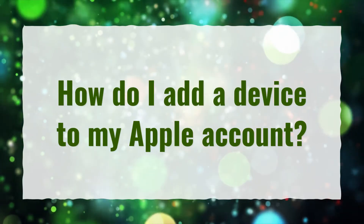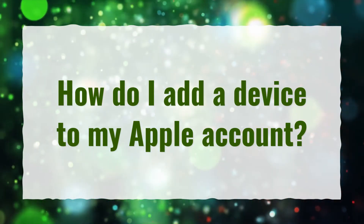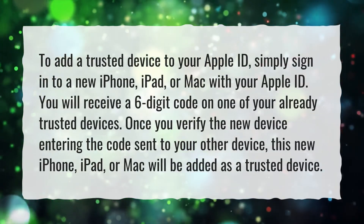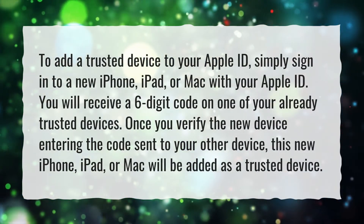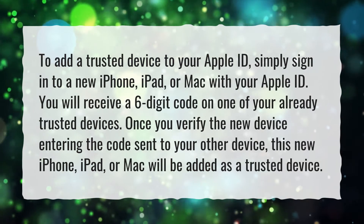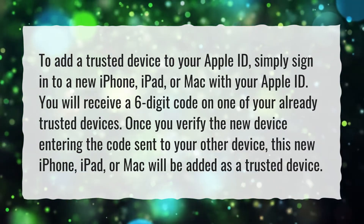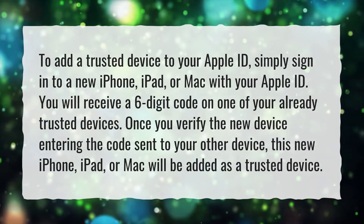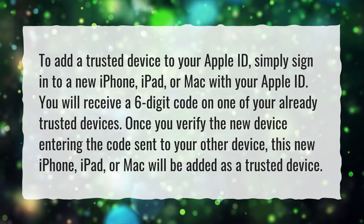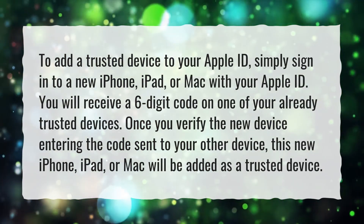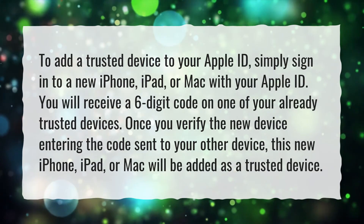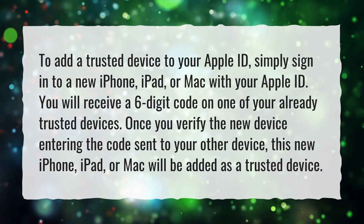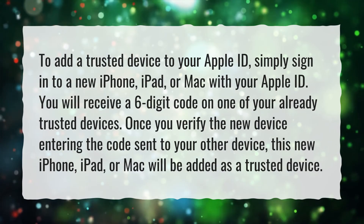How do I add a device to my Apple account? To add a trusted device to your Apple ID, simply sign in to a new iPhone, iPad, or Mac with your Apple ID. You will receive a six-digit code on one of your already trusted devices. Once you verify the new device by entering the code sent to your other device, this new iPhone, iPad, or Mac will be added as a trusted device.